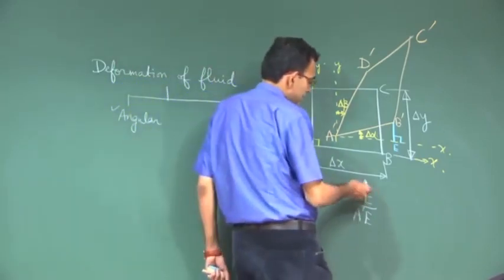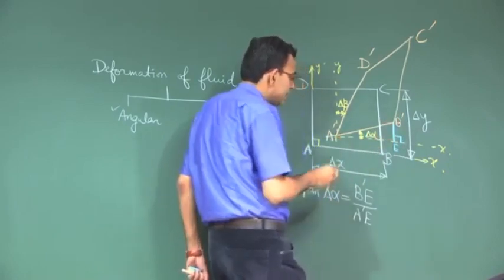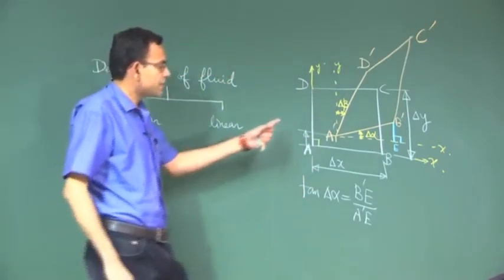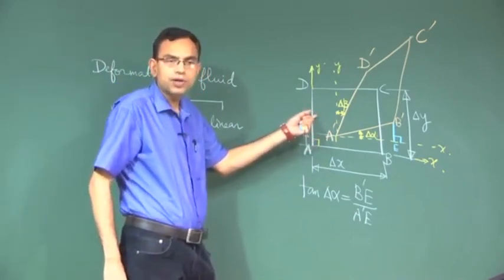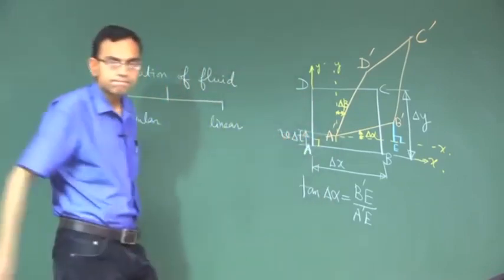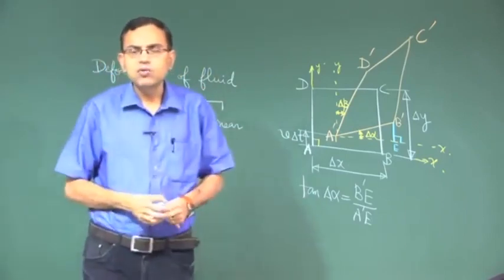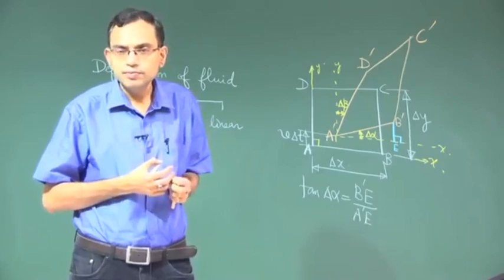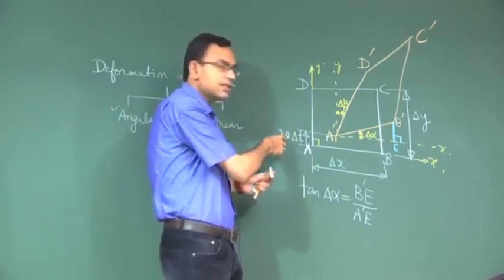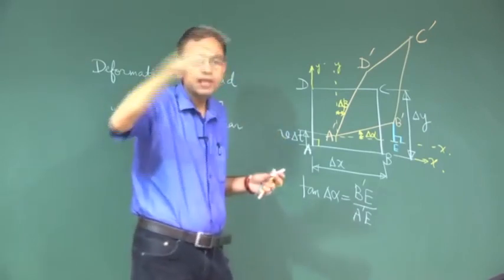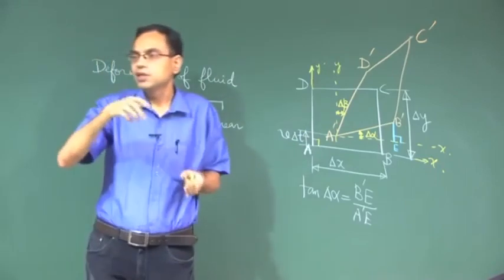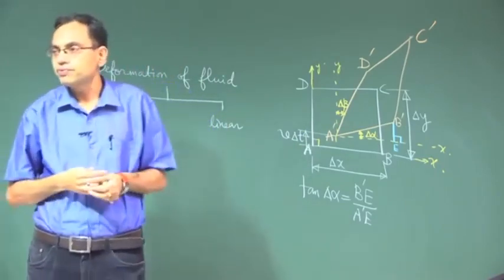How do we estimate the length B prime E? The displacement of A to A prime in the vertical direction is because of the y-component of velocity. So this is V times delta t, where V is the velocity along the y-direction. Why in the derivation do we take delta t very small? The reason is that if we take delta t as very small, only then over that period of time can we consider V to be not changing; otherwise V may change over time. If delta t is not small, then the displacement cannot be written simply as V times delta t — it would be the integral of V dt over the period of time.